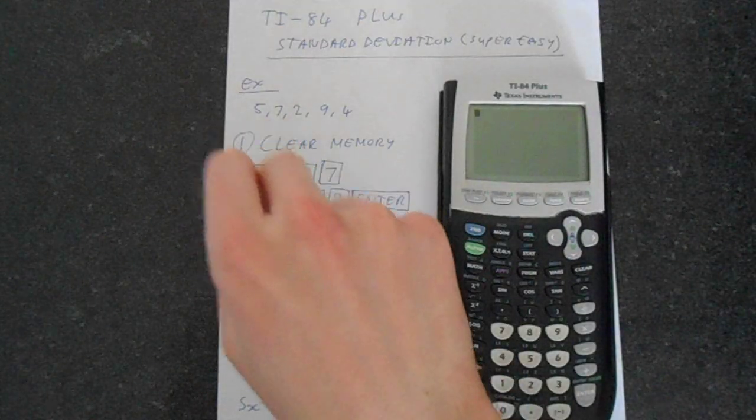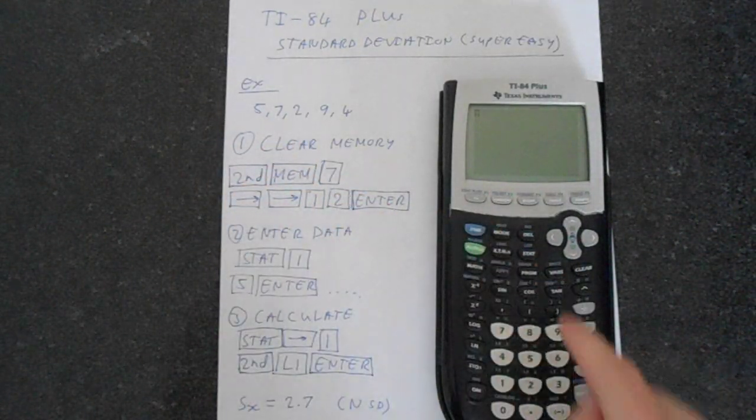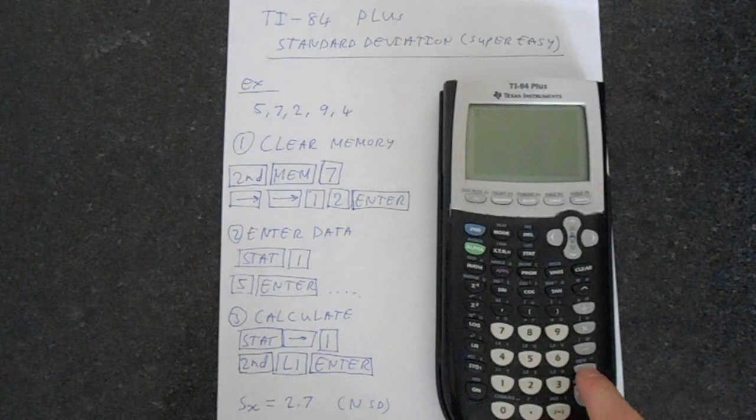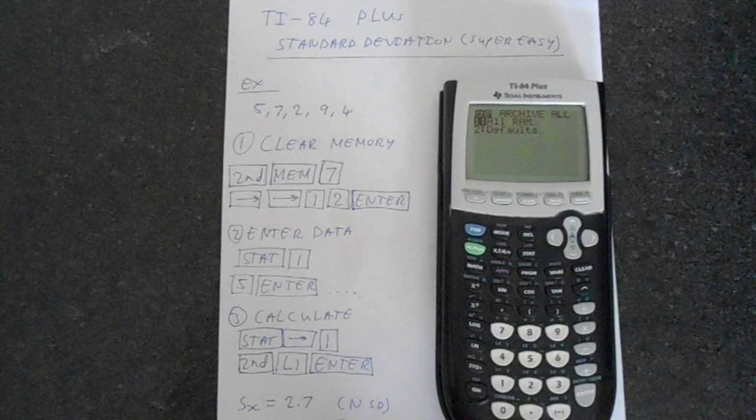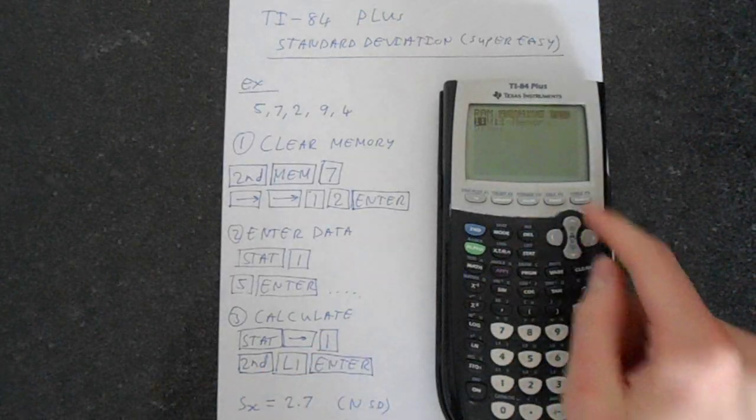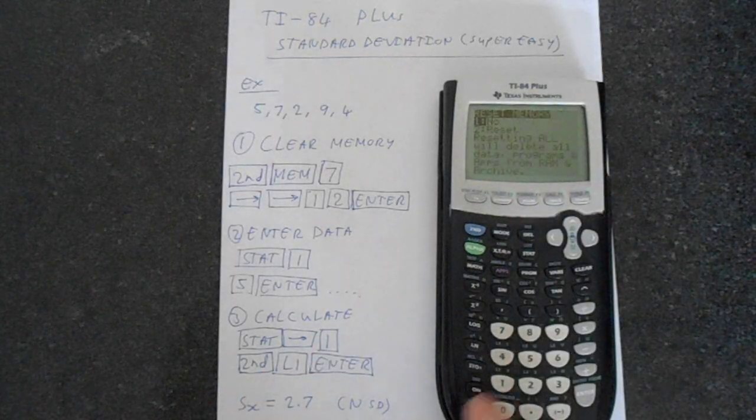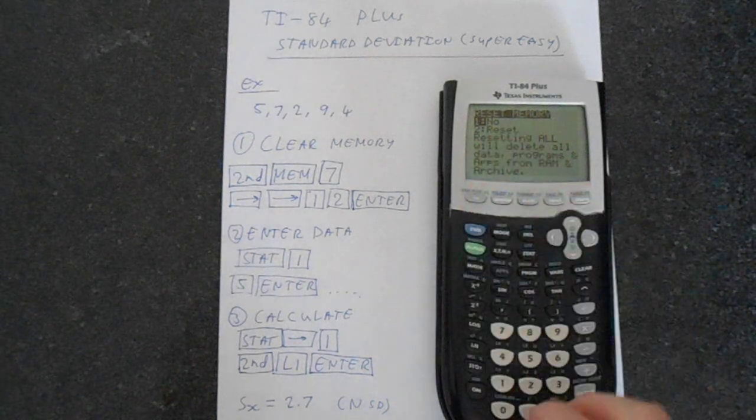Okay, first thing we do is always make sure that the memory is clear. So we go second function, then the memory which is on this plus button. We go to number seven which takes us to the reset menu. We go across twice to get to all, press one and then two for reset.